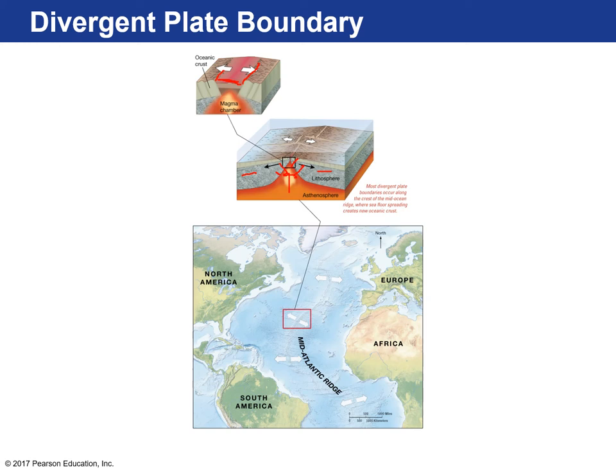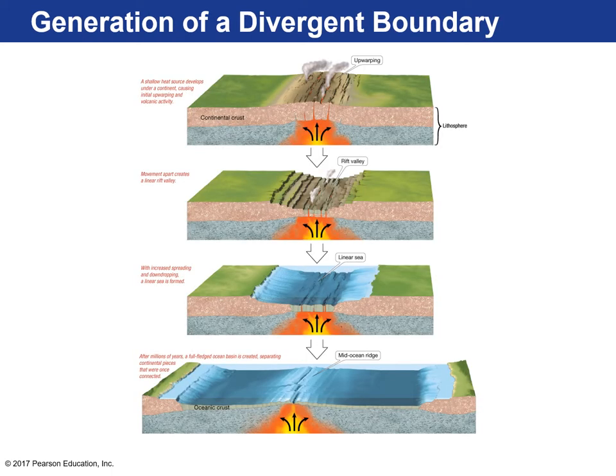This is what blew a lot of scientists' minds: not only was the ocean floor not just flat when they mapped it, but there were mountains like these ridges. On top of that, there's volcanism. In fact, the majority of volcanism on the surface of our Earth is underneath our oceans at these mid-ocean ridges.